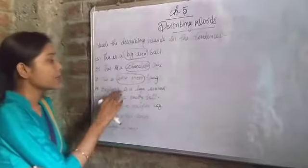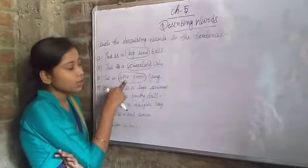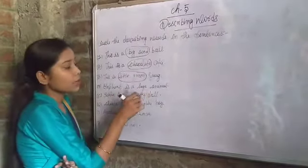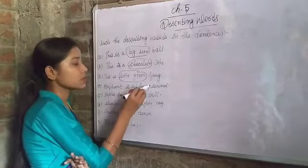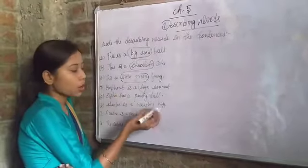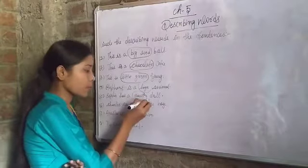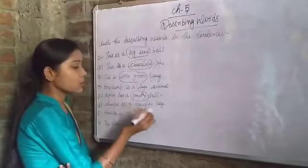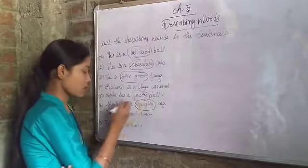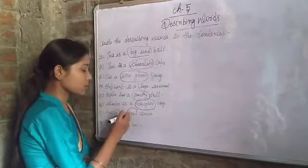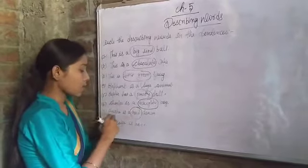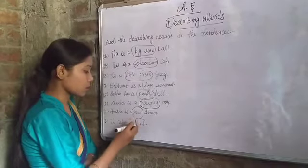Chocolate is one of them. Little green — little is size and green is color. Elephant is a huge animal — huge is also size. Sophie has a pretty doll — pretty. Charles is a naughty boy — naughty. Anisha is a good dancer — good. And the coffee is hot — hot.